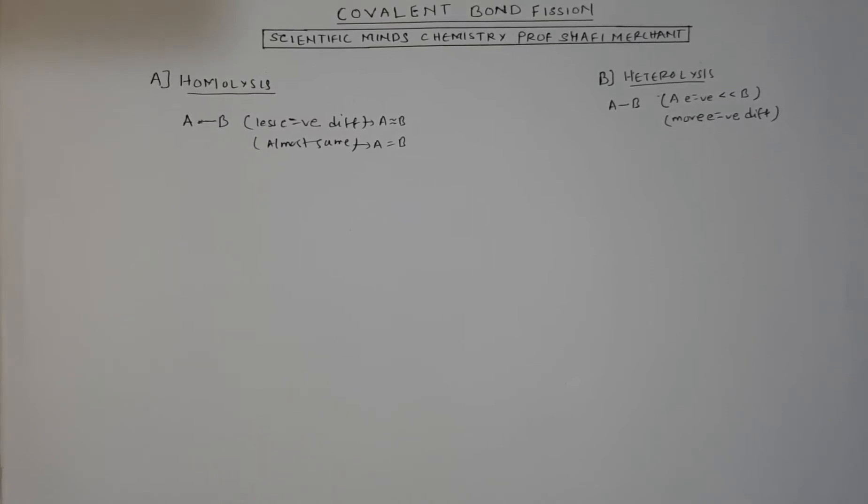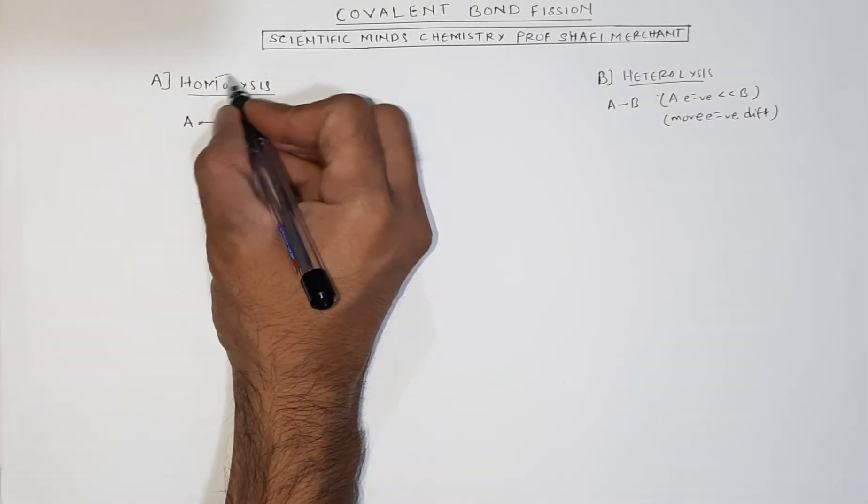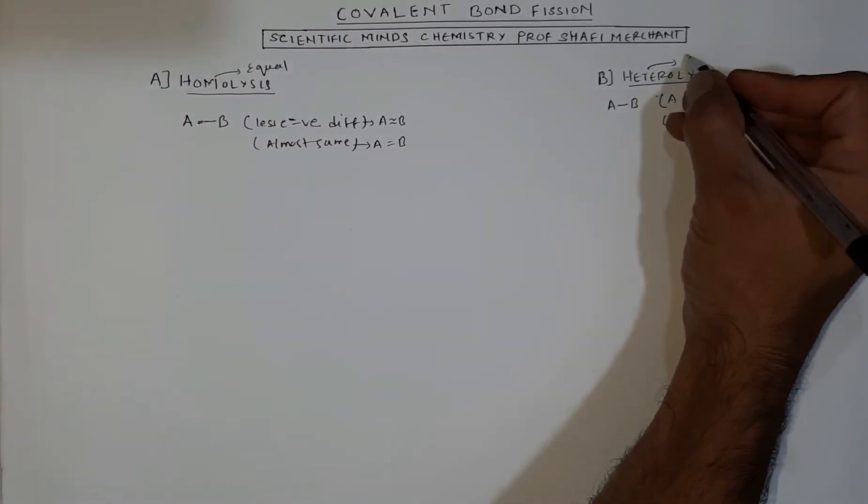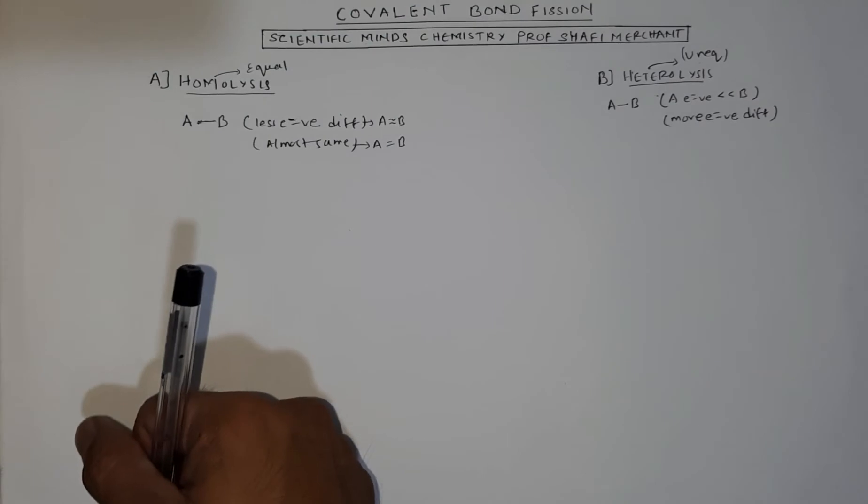Today's topic of discussion is covalent bond fission, that is breaking of covalent bonds in organic chemistry. You know covalent bonds are formed due to sharing of pair of electrons. So we will break this pair of electrons. It can be broken in two manners: homolysis and heterolysis. Homolysis means equal breaking and heterolysis means unequal breaking.